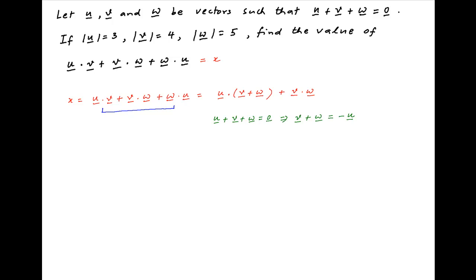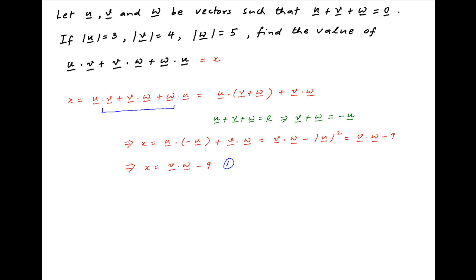Substituting this in the above expression for x, we get x is equal to u dot minus u plus v dot w. This is equal to v dot w minus the absolute value of vector u squared. Now, the absolute value of vector u is equal to 3, therefore the value of x simplifies to v dot w minus 9. Let's call this result 1.